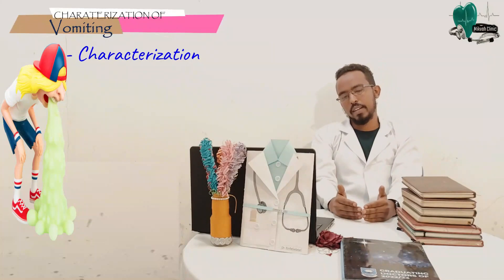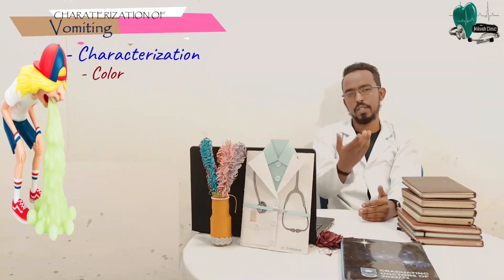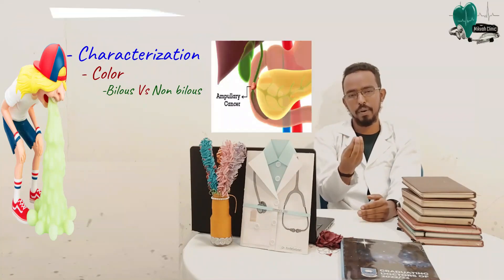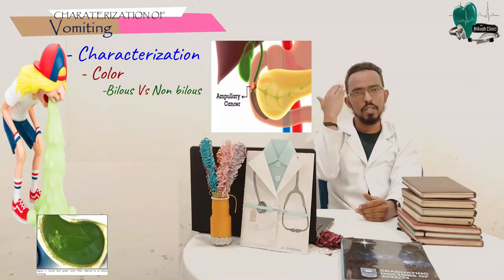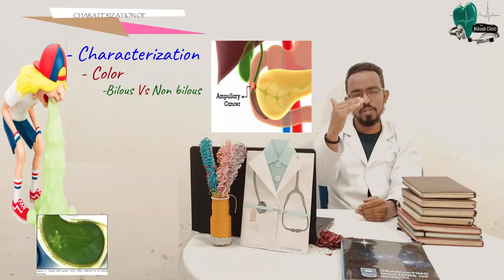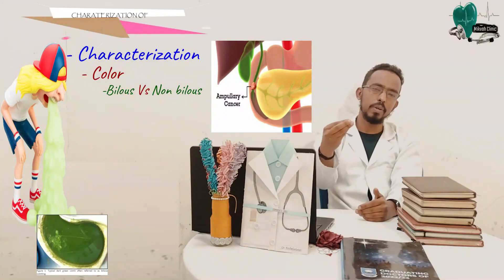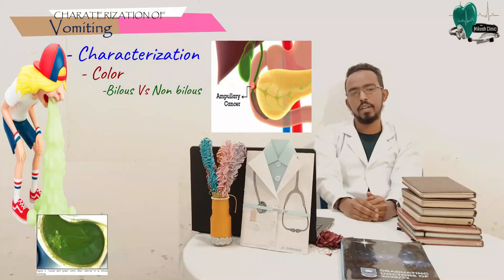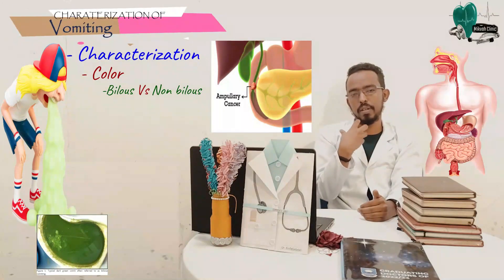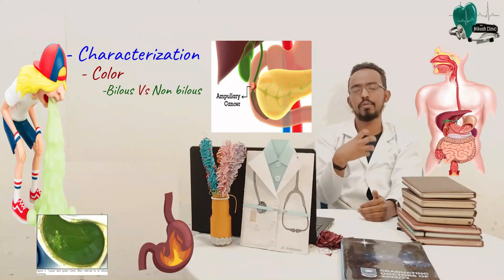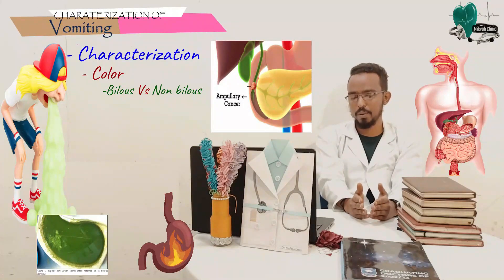There are important things to characterize vomiting. One thing is the color — whether it's bilious or non-bilious. If it contains bile, the color becomes greenish. If the vomiting is bilious, we consider there is obstruction below the level of the ampulla of Vater, which is the place where bile enters the GI system. If it is non-bilious, then the vomiting source is from the stomach. So knowing the color is very important.